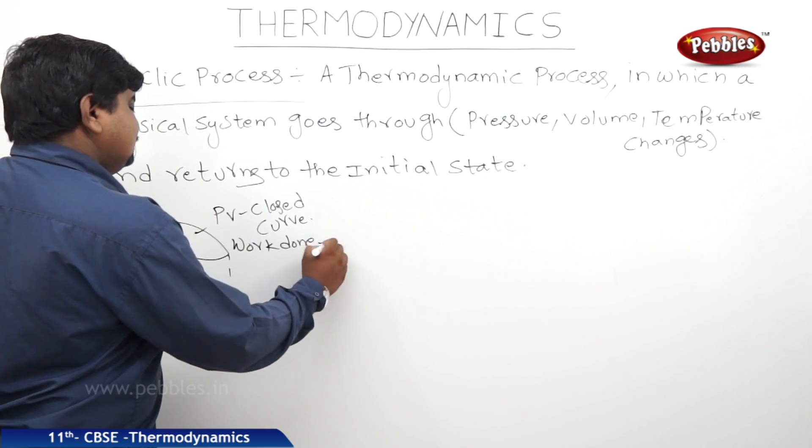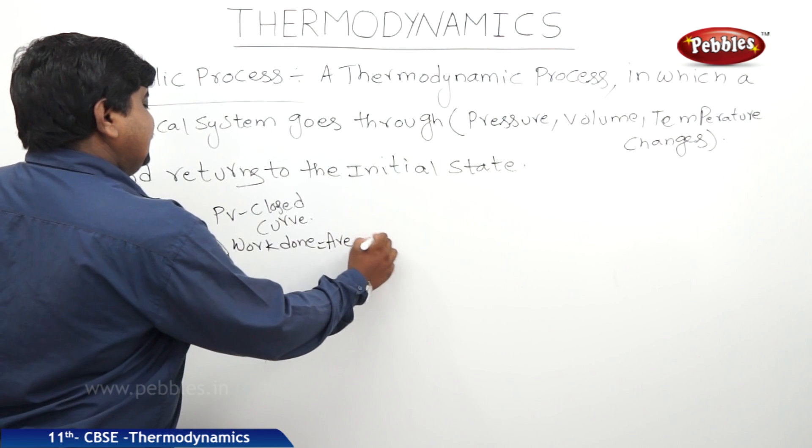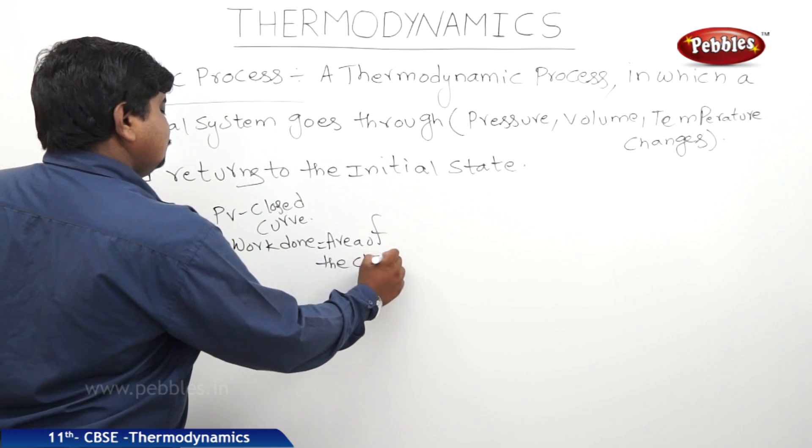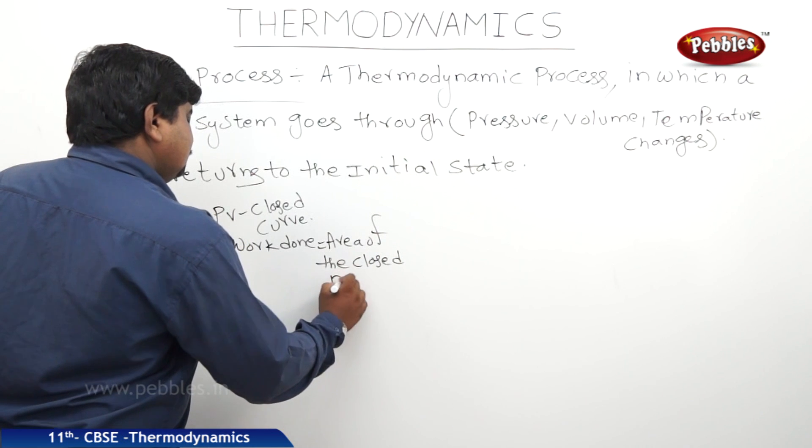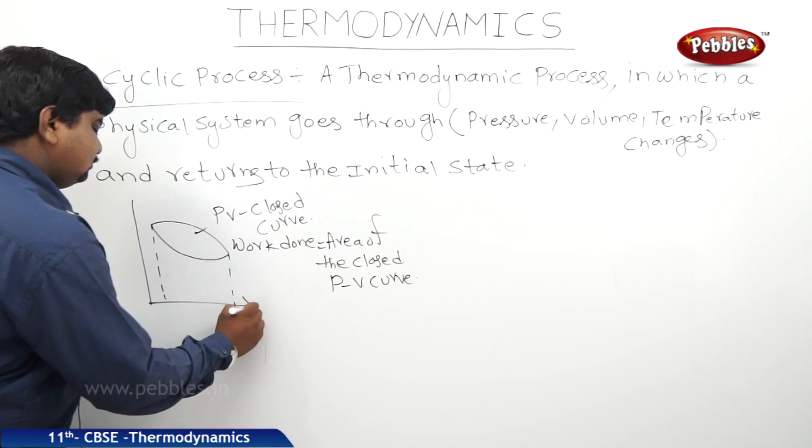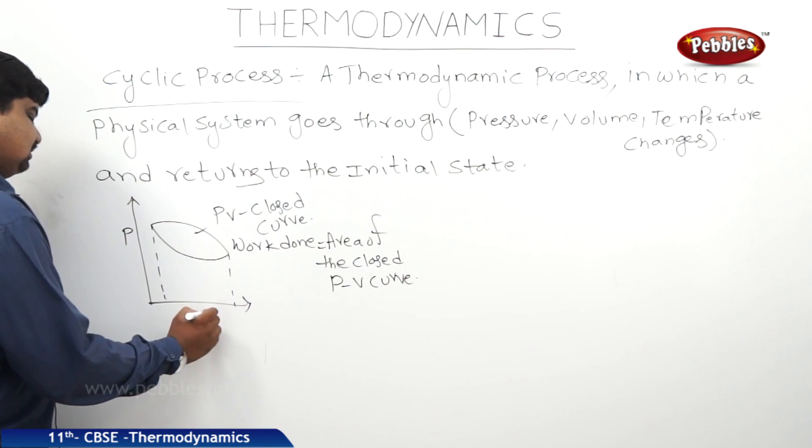So work done is equal to area of the closed curve, or we can write area of the closed PV curve. This is along pressure, this is volume.